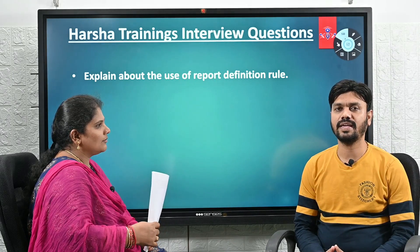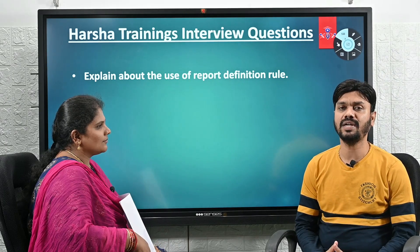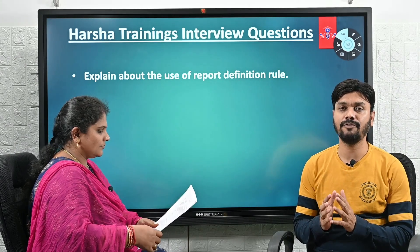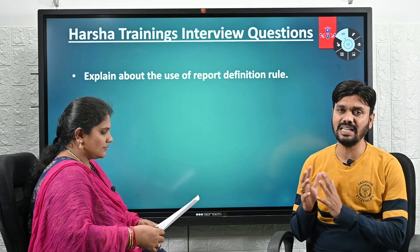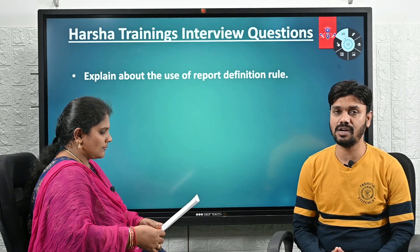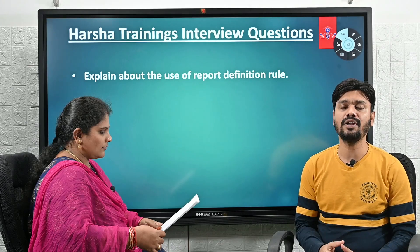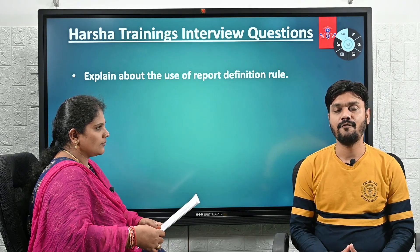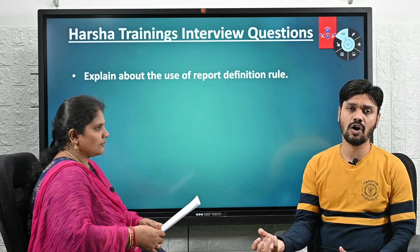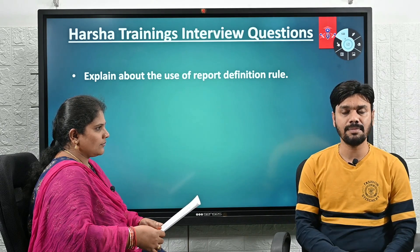A Report Definition Rule can be used to retrieve data from data types. We can retrieve data from rule-based tables in Pega, or we can also retrieve from external tables — that is also possible. Ultimately, we need a Report Definition Rule when we want to fetch information records from a table and utilize them for some processing purpose.